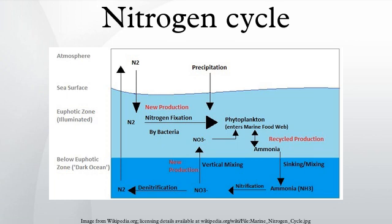The nitrogen cycle, like the carbon cycle, is an important part of every ecosystem. Nitrogen is present in the environment in a wide variety of chemical forms including organic nitrogen, ammonium, nitrite, nitrate, nitrous oxide, nitric oxide, or inorganic nitrogen gas.